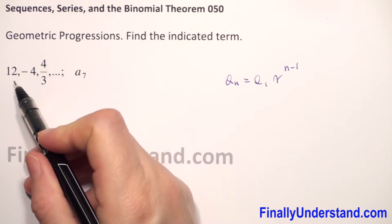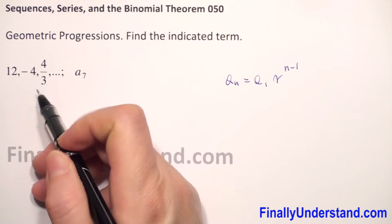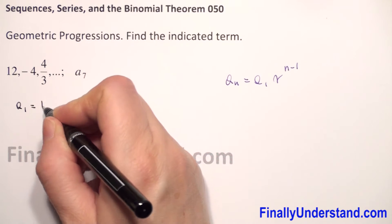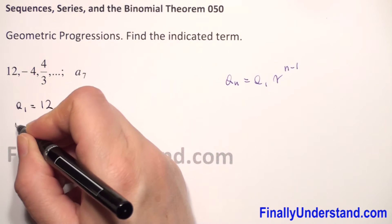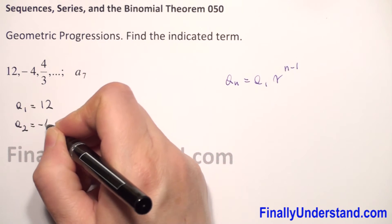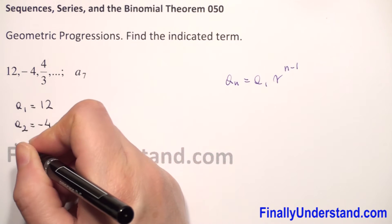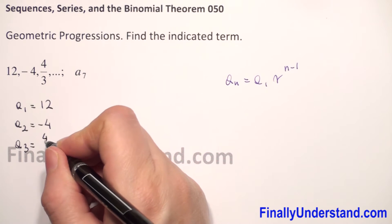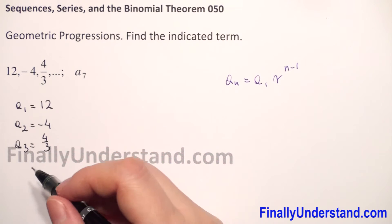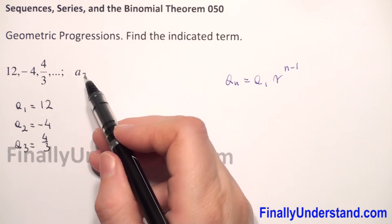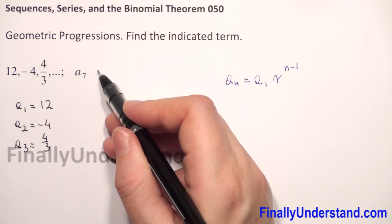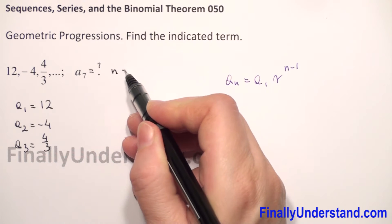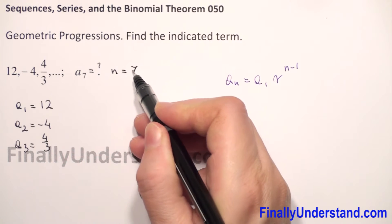We are given the first, second, and third terms. So a1 is equal to 12, a2 is equal to negative 4, and a3 is equal to 4 over 3. We have to find the 7th term, so n is equal to 7.